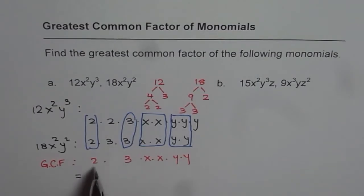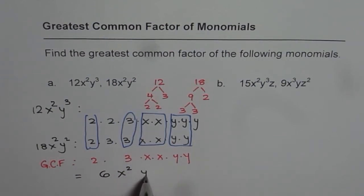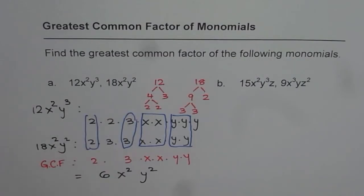So that gives us the greatest common factors. When you multiply all of them, 2 times 3 is the number 6, x times x is x², y times y is y². So we say that the greatest common factor for these two monomials is 6x²y². I hope the steps are absolutely clear to you.